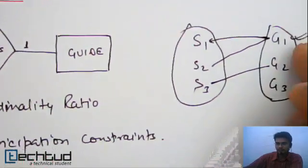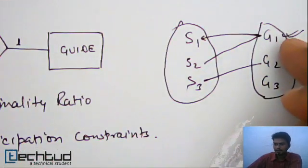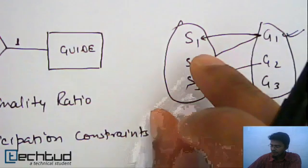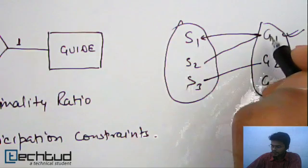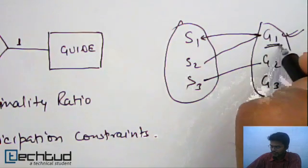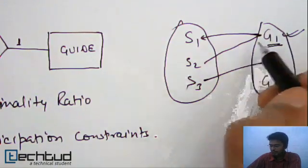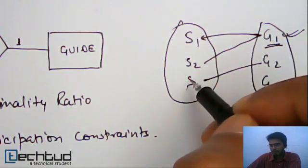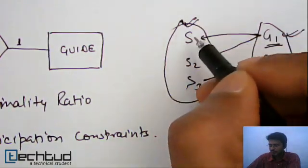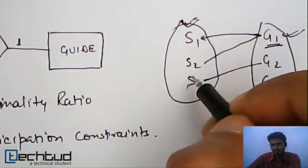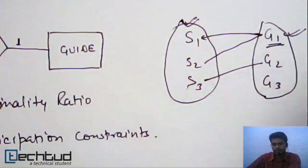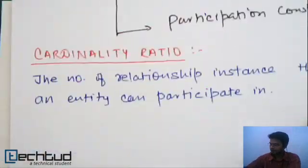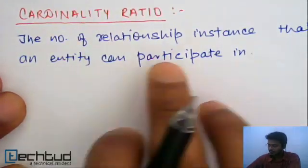This is the restriction over our relationship — we are restricting the number of instances a particular entity type can participate in. This guide can participate in two relationship instances: one with s1 and one with s2, whereas this student entity can participate in only one relationship instance. So cardinality ratio takes care of the number of relationship instances an entity participates in.